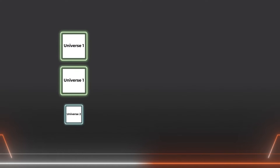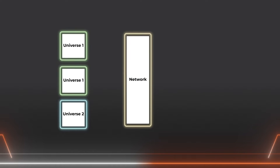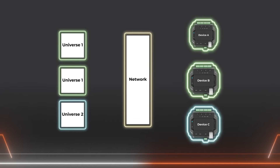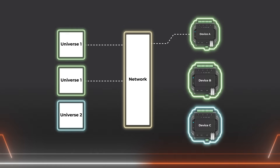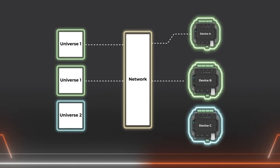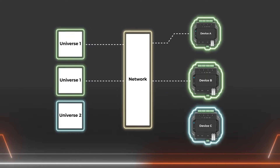For example, an eDMX generator is generating two universes of lighting effects, which are to be delivered to three lighting devices. It transmits universe 1 to device A by sending to device A's IP address, and then sends a separate copy of the same universe to device B by sending to device B's IP address.